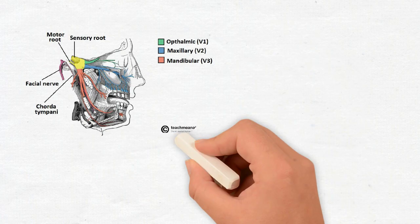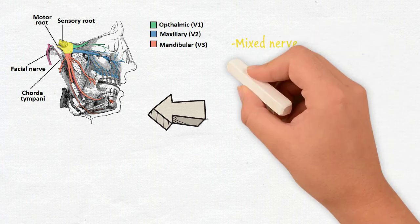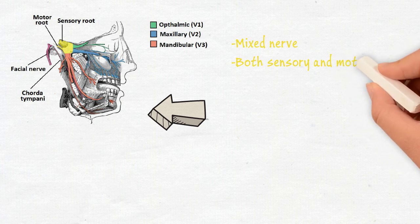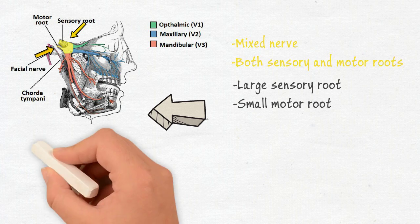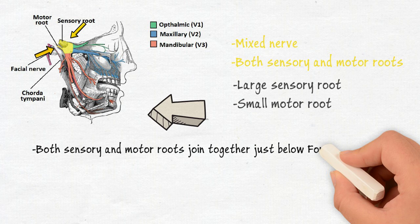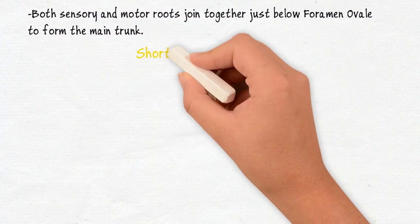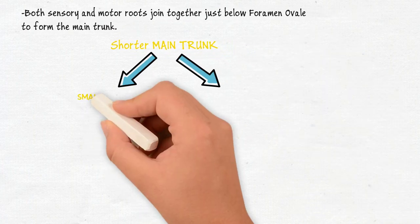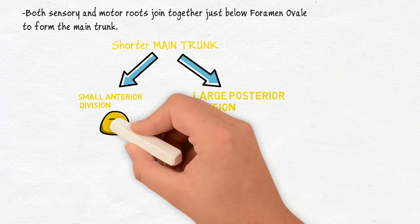The mandibular nerve is a mixed nerve which means it contains both sensory and motor roots. In the figure you can appreciate that the sensory root is large and the motor root is small. Both these roots join together just below the foramen ovale to form the main trunk of the nerve. The main trunk has a shorter course and it soon divides into two: a small anterior division and a large posterior division.